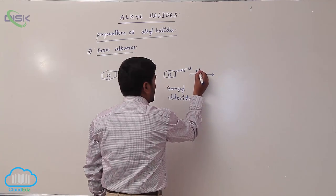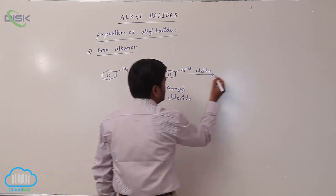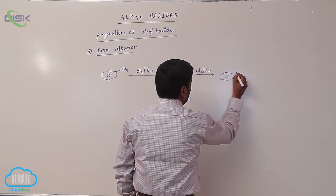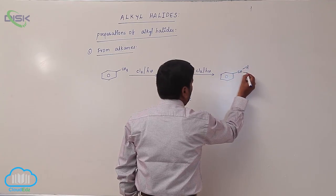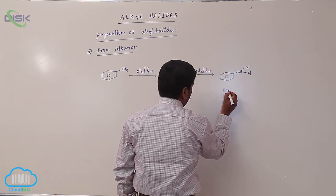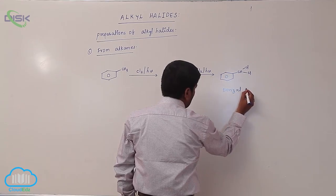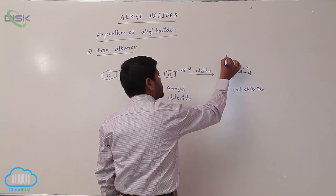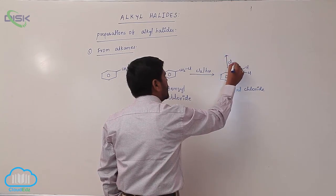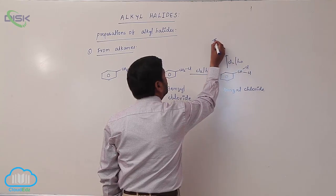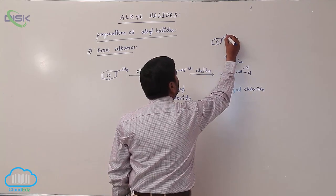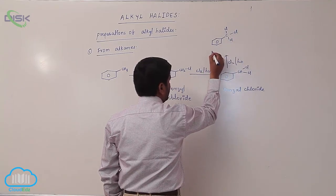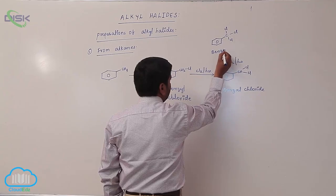This again reacts with chlorine in the presence of sunlight to form a dihalide. It again reacts with halogen in the presence of sunlight to form benzyl trichloride. This is known as benzyl trichloride.